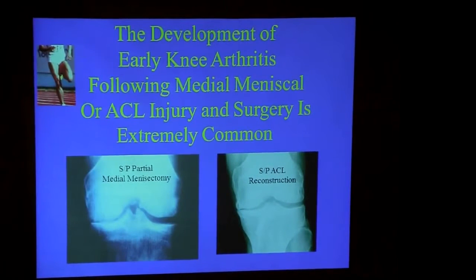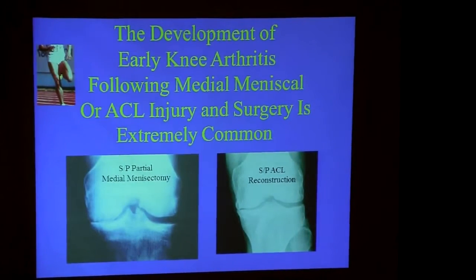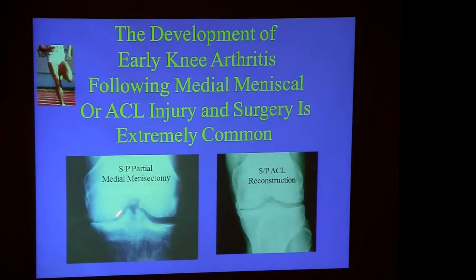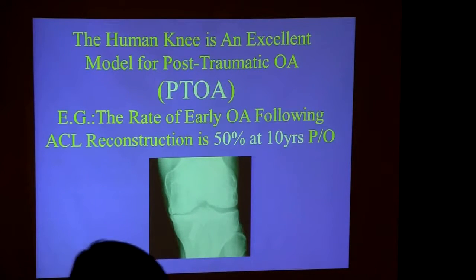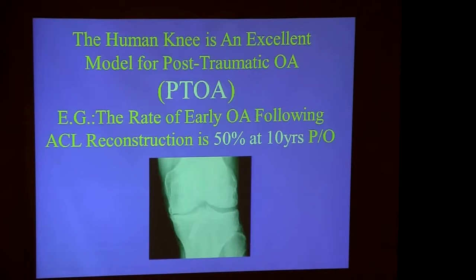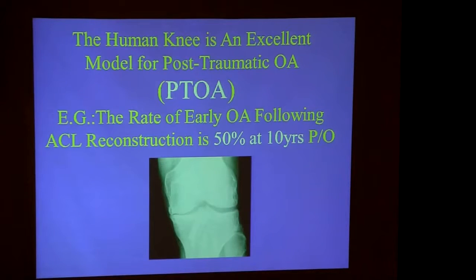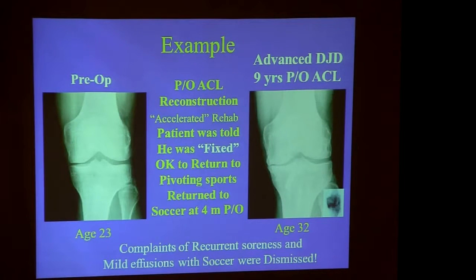The development of early knee arthritis following meniscal or ACL injury and surgery is extremely common. Here's an example of somebody who had a partial meniscectomy and developed arthritis in the medial compartment, an ACL reconstruction and arthritis in the medial compartment. The human knee is an excellent model for post-traumatic osteoarthritis. The rate of early arthritis following ACL reconstruction in the world's literature is an astounding 50% at 10 years — an embarrassing and very disturbing statistic.